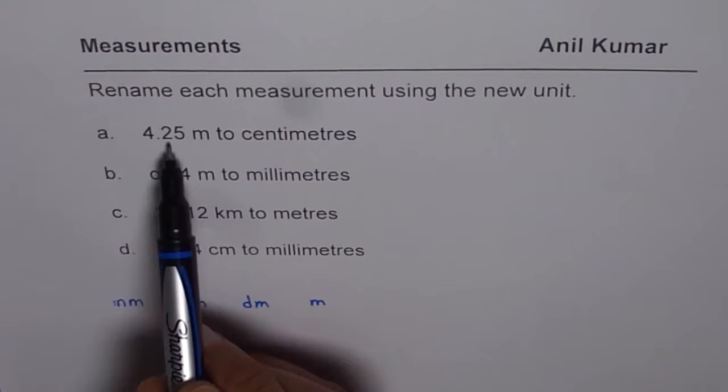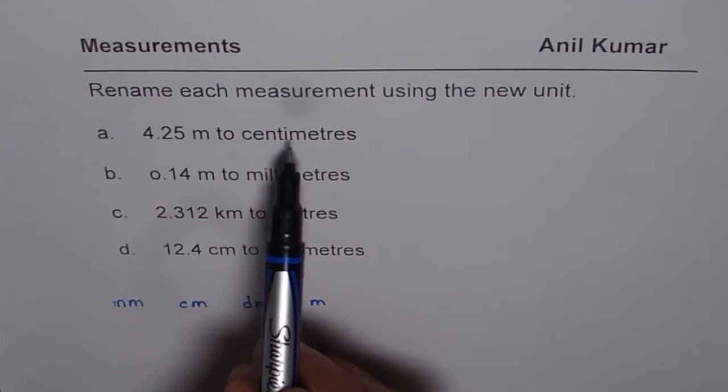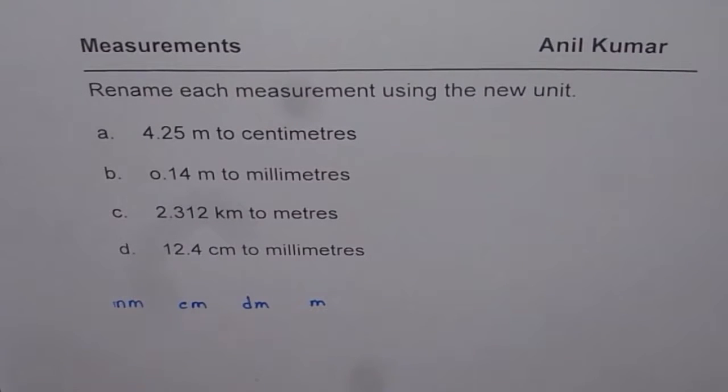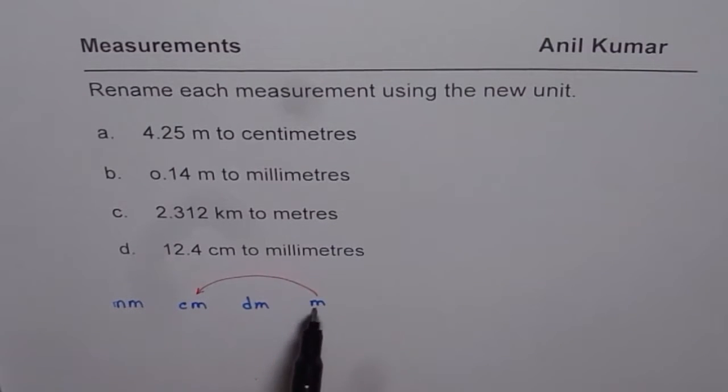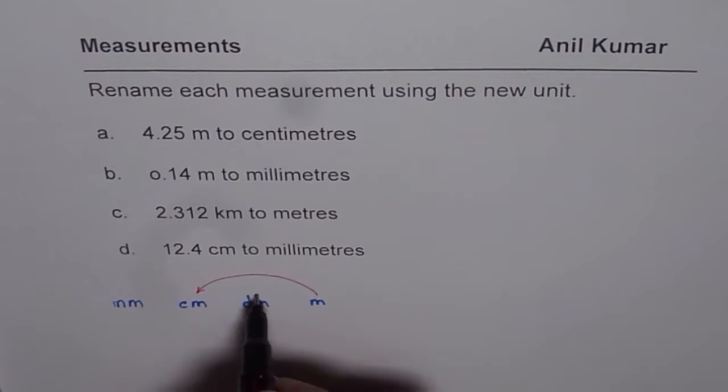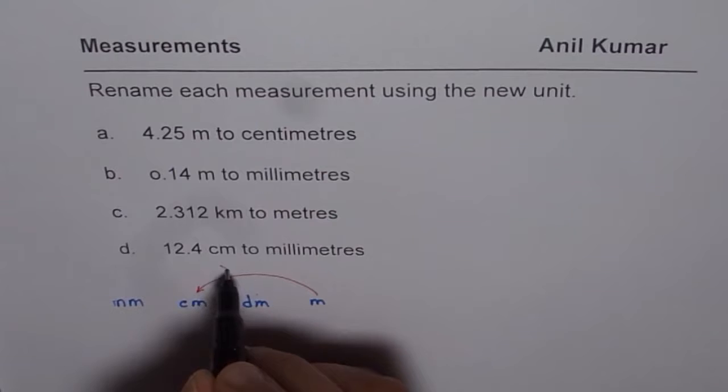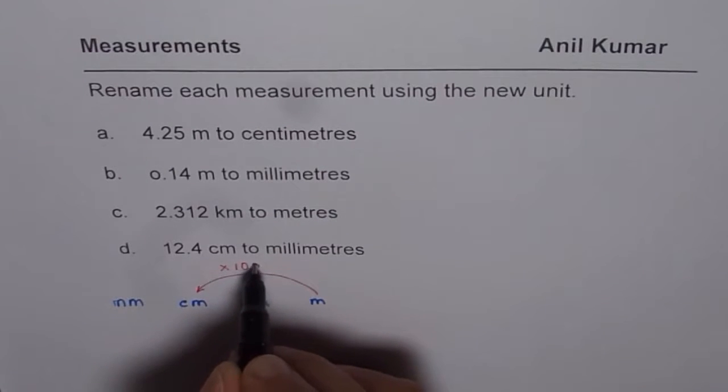So when we have 4.25 meters to be converted to centimeters, we are trying to go from meters to centimeters in this direction. So that is a bigger unit. To get to centimeters, we will multiply by 10 and 10, hundred. So that is times hundred.